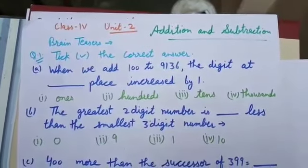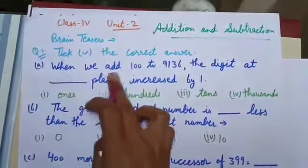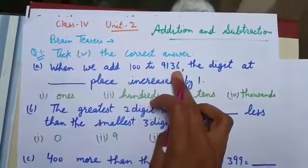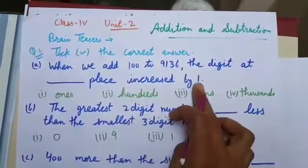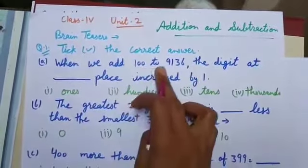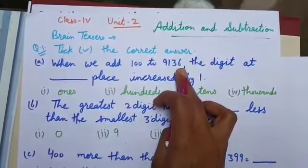Tick the correct answer. Come to part A. When we add 100 to 9136, the digit at which place increases by 1?